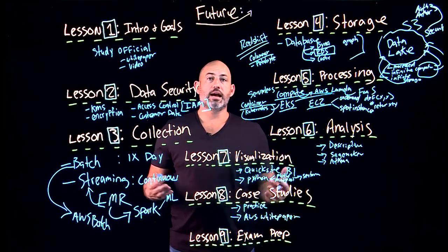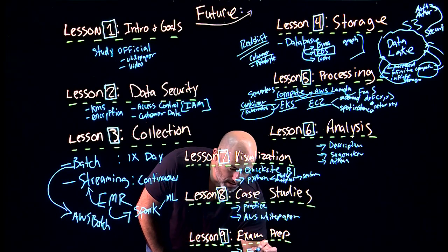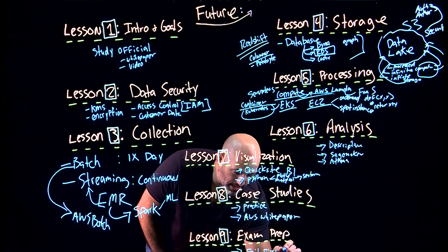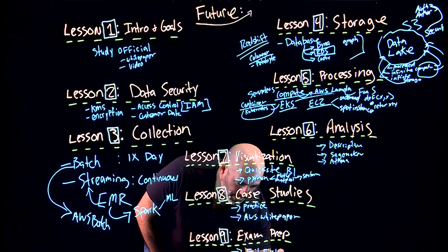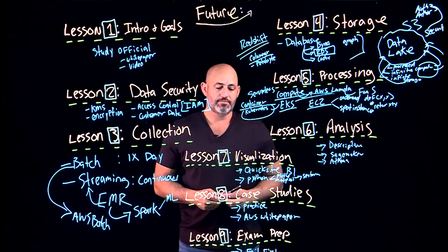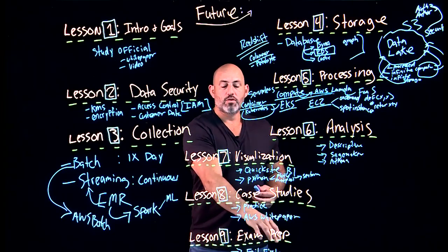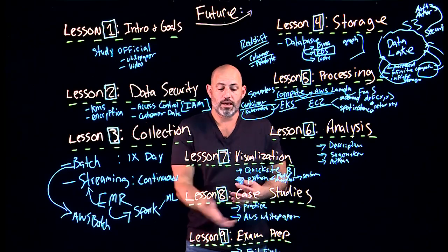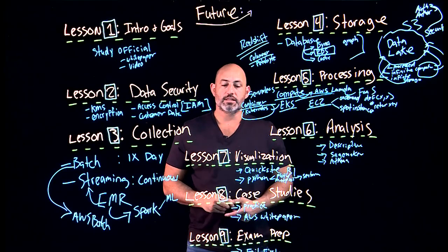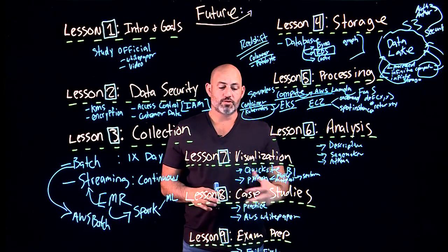Finally, in lesson nine on exam prep, a key takeaway is that it's okay to fail the first time. I'd even recommend assuming you will fail the first time and that you can pass the second time. This meta exam strategy takes the pressure off — you treat the first attempt as a dry run, and then you're truly ready for the second. I've used this strategy a lot when helping students, and I feel it isn't talked about enough.